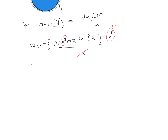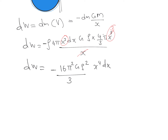Rearranging the equation, the small work done dW equals minus (16π²Gρ²/3) × x⁴ dx. To find the total work done we integrate this expression as the radius changes from 0 to R.